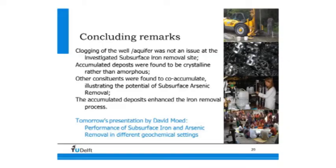In conclusion: clogging of the well and aquifer was not an issue at the subsurface iron removal site investigated. Accumulated deposits were found to be crystalline rather than amorphous, which minimizes clogging — and the large surface area used in the subsurface compared to conventional filters further reduces clogging risk. Other constituents were found to co-accumulate, and the accumulated deposits enhance the iron removal process. Tomorrow, David Moot will present on subsurface arsenic removal in different geochemical settings.